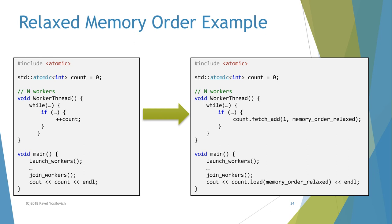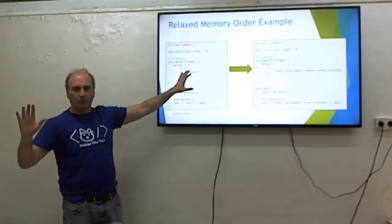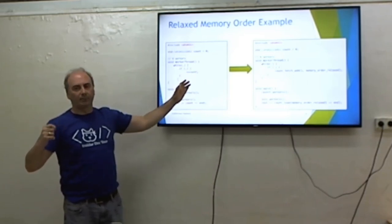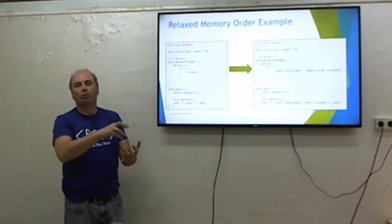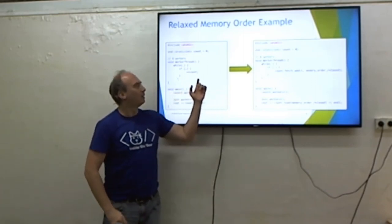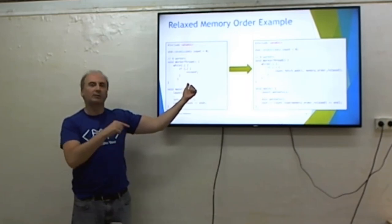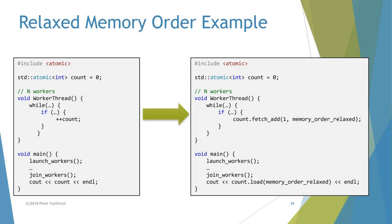From the same thread that writes, you'll always see the correct result — that's always the case from its own point of view. From another thread, that's not guaranteed with relaxed ordering. In this particular case, we don't need that guarantee since we only read the count after all workers have finished.